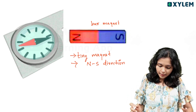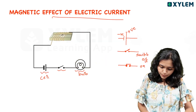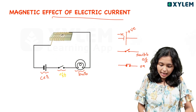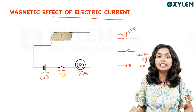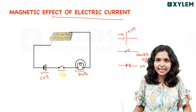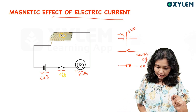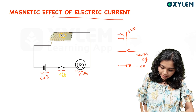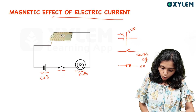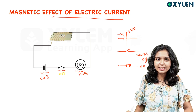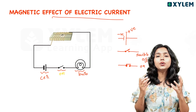In the switch off condition, we have the magnetic needle. In that case, there is no deflection. The magnetic needle remains in its position. We have the circuit ready.